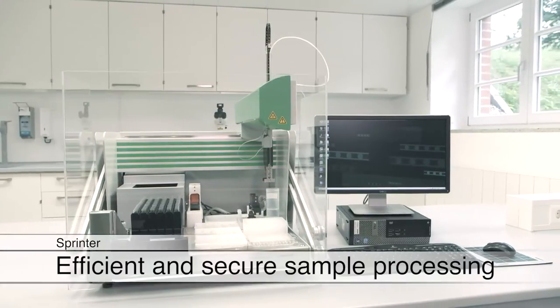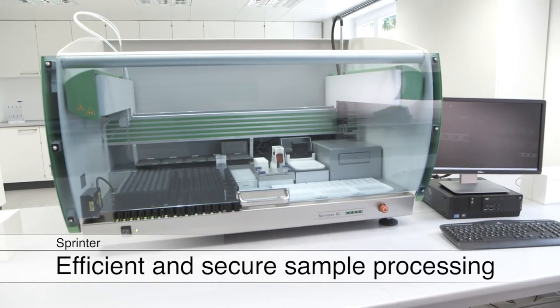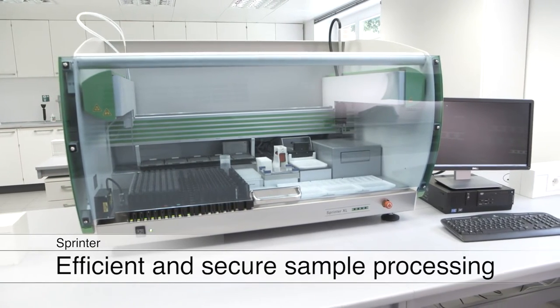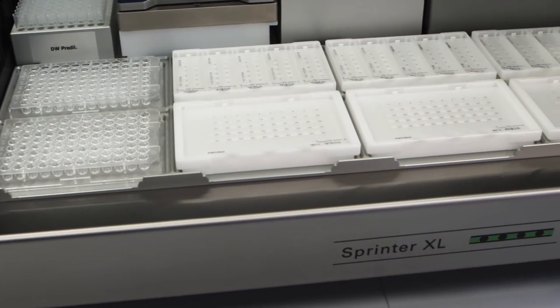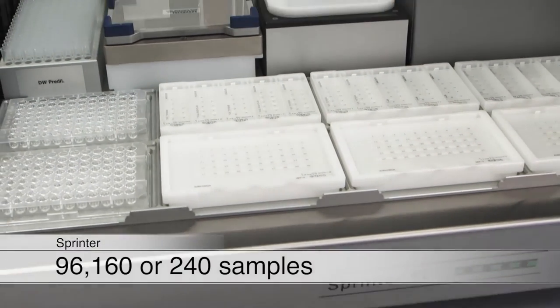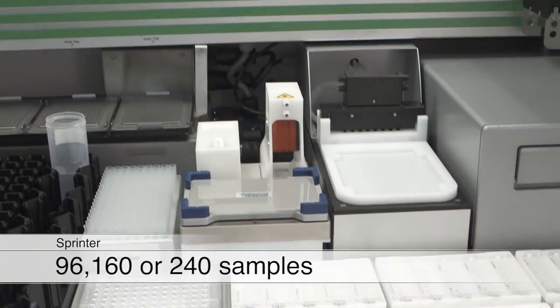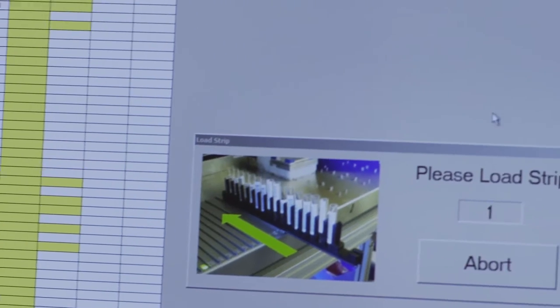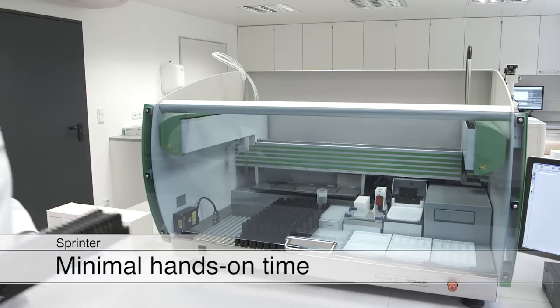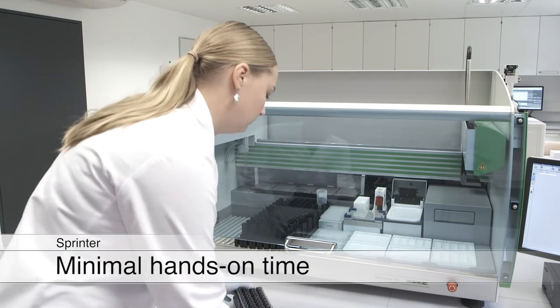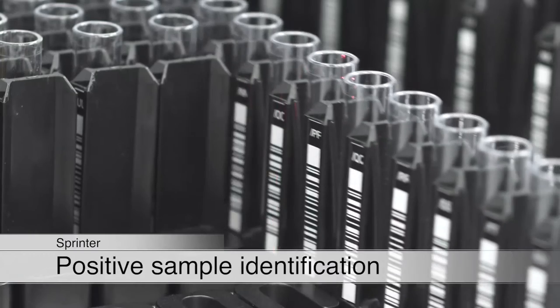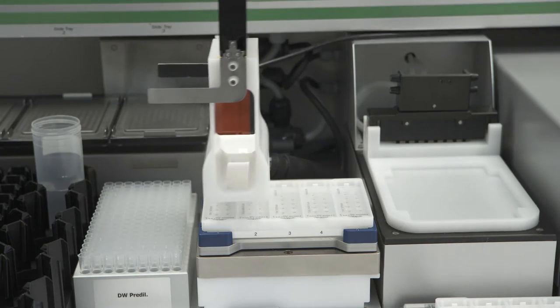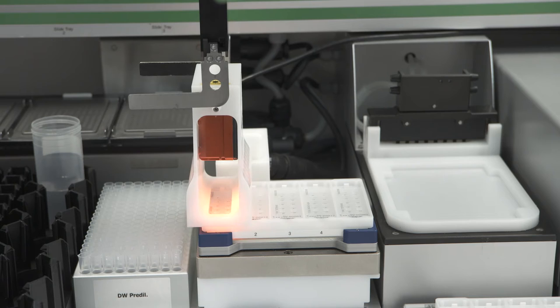The IF Sprinter and Sprinter XL are efficient and reliable systems for the automated processing of immunofluorescence tests. They can process 96, 160 or 240 samples in one run. Software handling and loading of the instruments is very easy and only requires minimal hands-on time. The samples are clearly identified by their barcodes. For complete traceability of patient results, the object slides are also automatically identified.